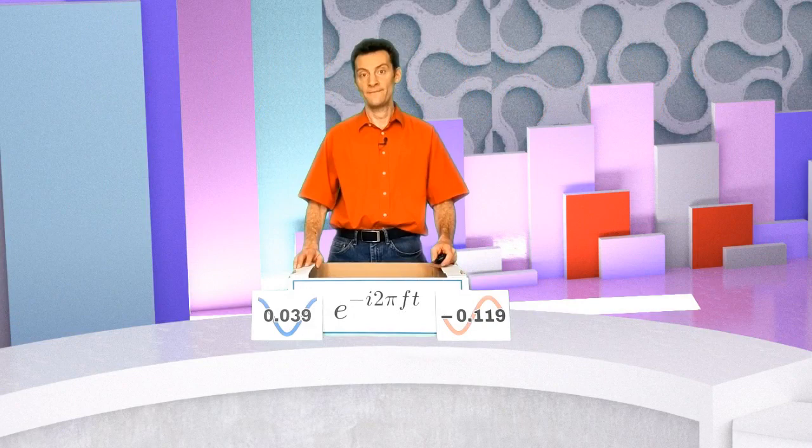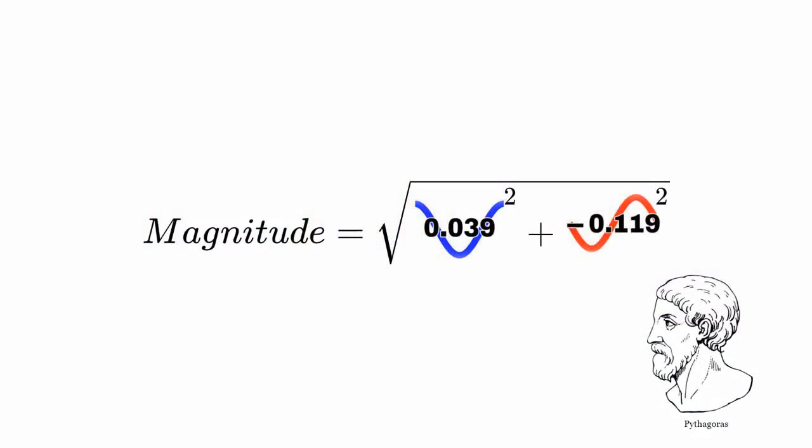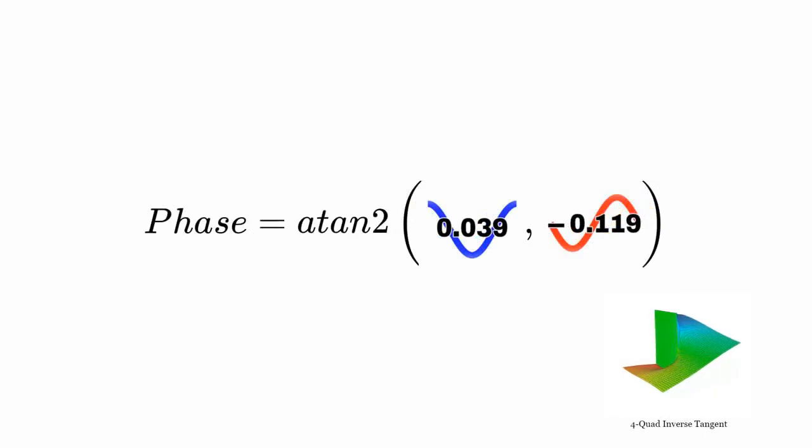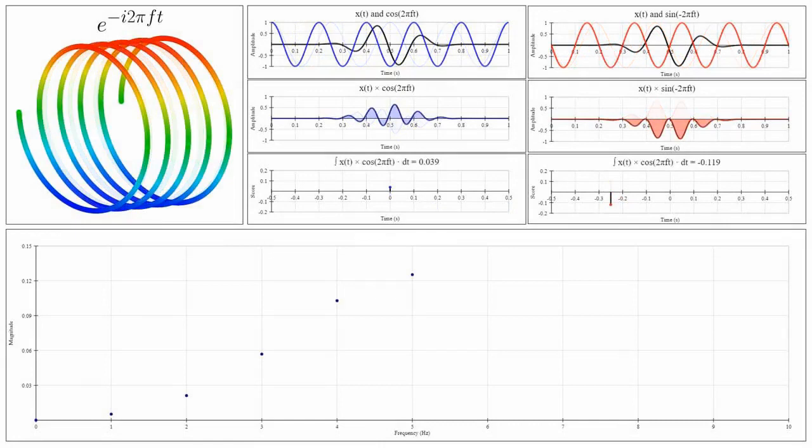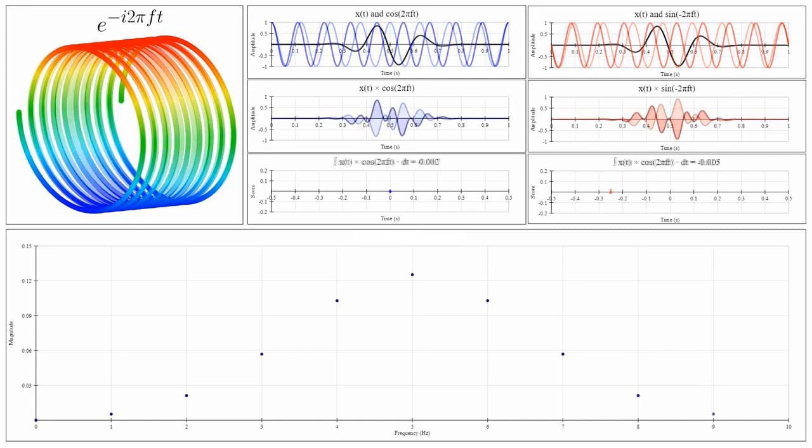What is more, by using Pythagoras on these two numbers, I can calculate a value that is proportional to the magnitude of the contribution of the sinusoid to the overall signal. And by performing a four-quadrant inverse tangent function on these two numbers, I can calculate the phase. Repeating this operation again and again using complex exponentials at lots of different frequencies enables us to plot a graph of each frequency, how much it contributes to the signal, and what its phase is. This is the Fourier transform for this signal.